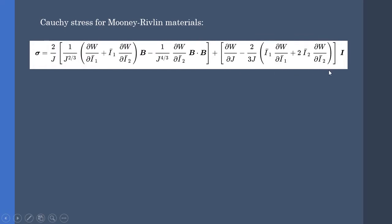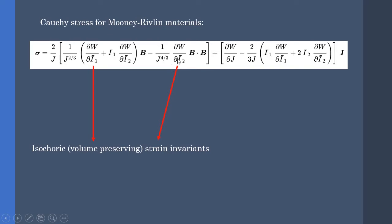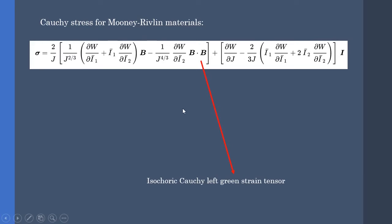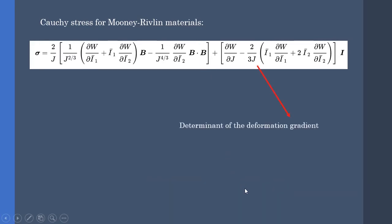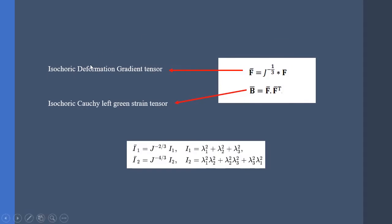The Cauchy stress for Mooney-Rivlin material is given by the following equation, in which W is the strain energy density function, I-bar-1 and I-bar-2 are the strain invariants in isochoric form, B is the Cauchy left Green strain tensor, and J is the determinant of the deformation gradient. For convenience we are using the isochoric deformation gradient and isochoric Cauchy left Green strain tensor, which are defined by these equations.